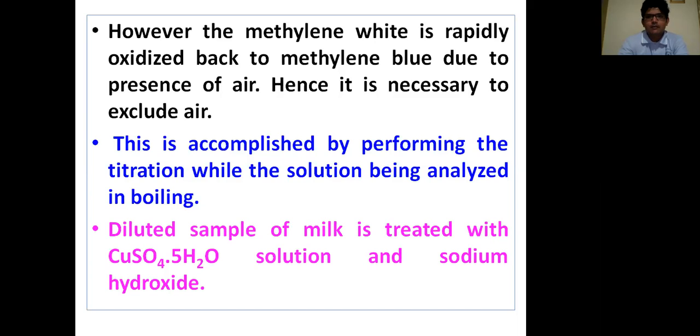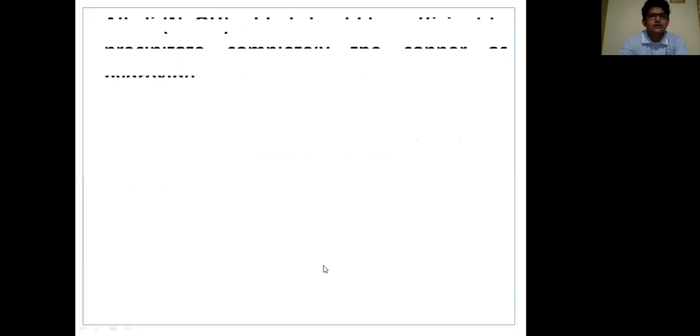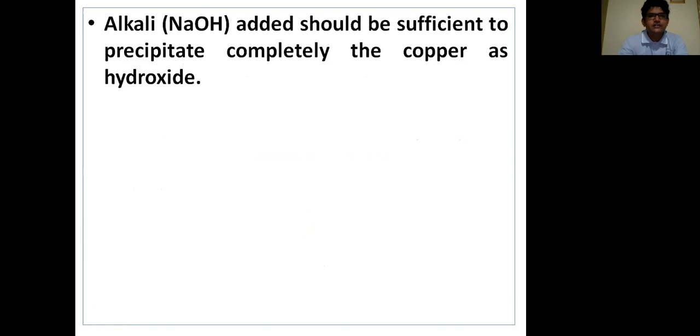Here is the detailed procedure about how to analyze the sugar present in the honey. First, take a sample of honey and treat it with copper sulfate solution and sodium hydroxide. The NaOH added should be sufficient to precipitate completely the copper as hydroxide.